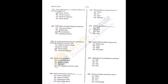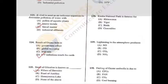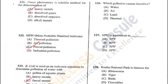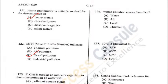Question 125: The Strait of Gibraltar is known as the Pillars of Hercules. It connects the Atlantic Ocean to the Mediterranean Sea — A is the correct answer. Question 126: Which pollution causes jaundice? Water — it is a waterborne disease — A is the correct answer.